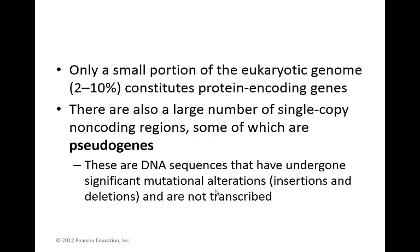Looking at all this repetitive DNA, only a very small portion — relatively, maybe 2 to 10% — of the eukaryotic genome actually constitutes protein-coding genes. It used to be thought that many of these regions were so-called junk DNA, but we now know that many of these regions perform very important functions. There are also a large number of single-copy non-coding regions, some of which we could call pseudogenes — DNA sequences that look like a gene but have undergone significant mutational alterations, either insertions or deletions, and are not actively being transcribed, so you're never going to get a protein product from them.